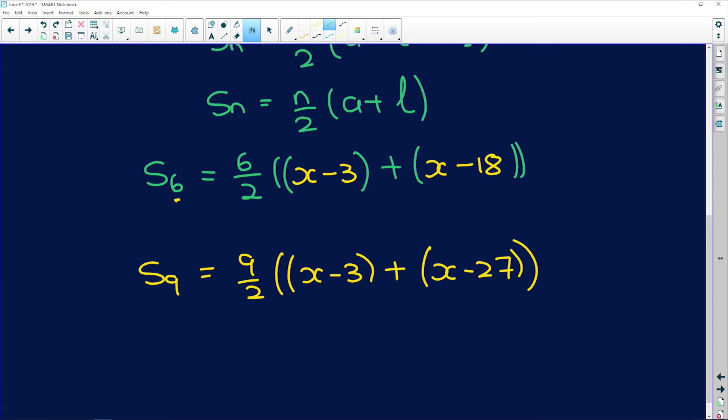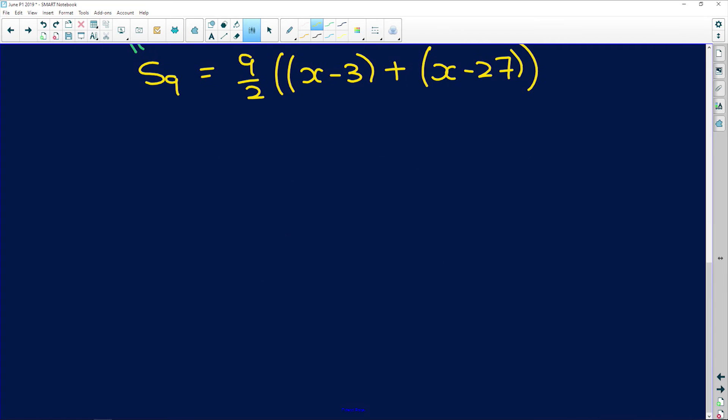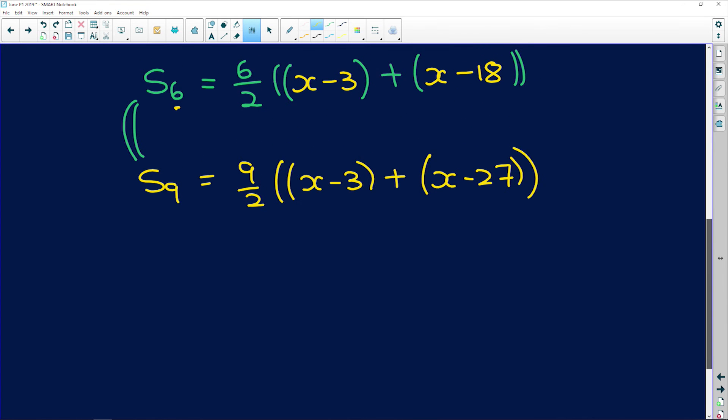And now they say to us right at the beginning that these two are equal to each other. So if we make the left hand side equal to the right hand side, we can solve for x. So 6 over 2 into, I'm going to try and simplify this expression, x plus x is 2x and negative 3 minus 18 is negative 21.